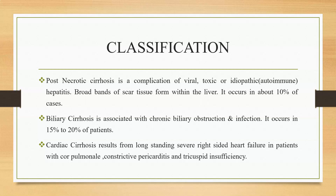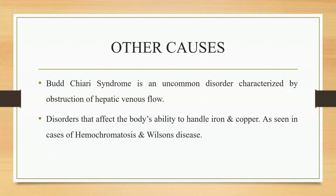In post-necrotic cirrhosis, broad bands of scar tissue form within the liver; it occurs in about 10 to 15% of cases. Biliary cirrhosis is associated with chronic biliary obstruction and infection, occurring in 15 to 20% of patients. Cardiac cirrhosis results from long-standing severe right-sided heart failure in patients with cor pulmonale, constrictive pericarditis, and tricuspid insufficiency.